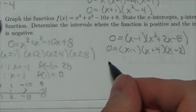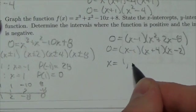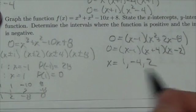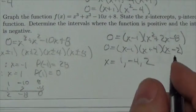And so the x-intercepts of the function, or the zeros if you will, will be 1, negative 4, positive 2. Good. So there's part of the answer already here.